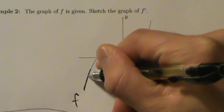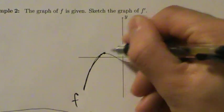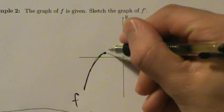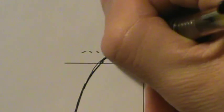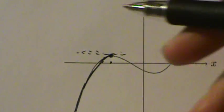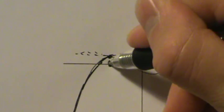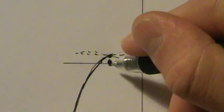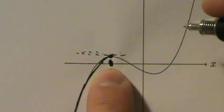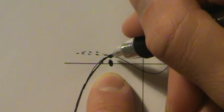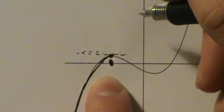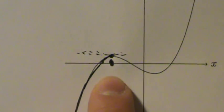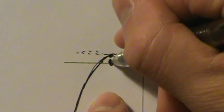f increases from here all the way up to here, and then it starts decreasing again. What's happening right at that point? f turns around, changes from increasing to decreasing, so that means there's a horizontal tangent line right there. That means the derivative is going to be zero — the derivative is going to touch the x-axis right there, because the value of the derivative is zero at that point. So the graph of the derivative of f has to touch the x-axis here.